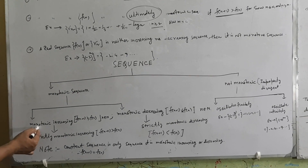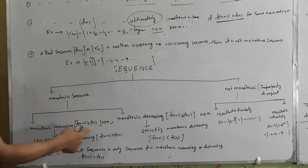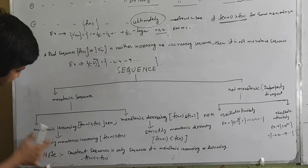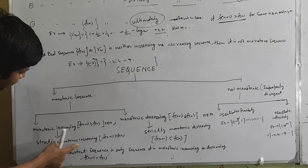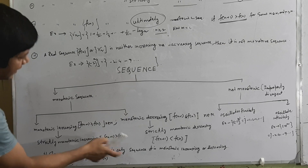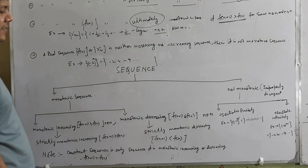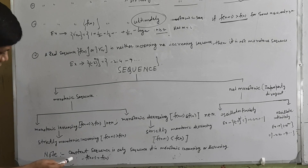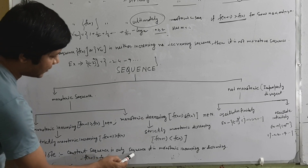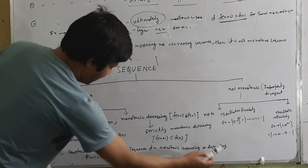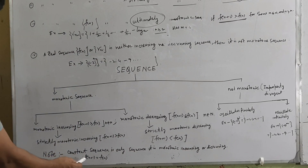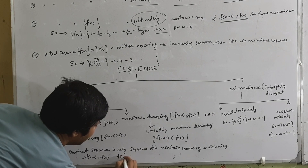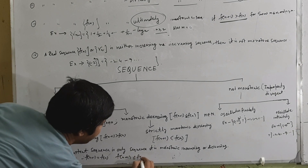We divide into: monotonic increasing strictly, and monotonic decreasing sequence, and strictly monotonic decreasing sequence. Note: a constant sequence is the only sequence that is both monotonic increasing and monotonic decreasing, because f(n+1) equals f(n).